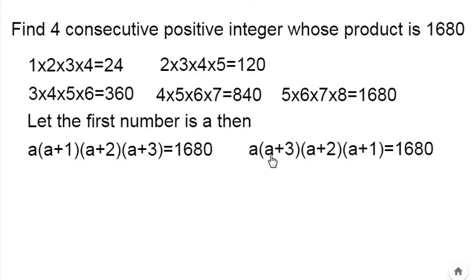Now this is a²+3a. The first part is a²+3a, and this part would be a²+3a+2, that is equal to 1680. If a²+3a is equal to x...